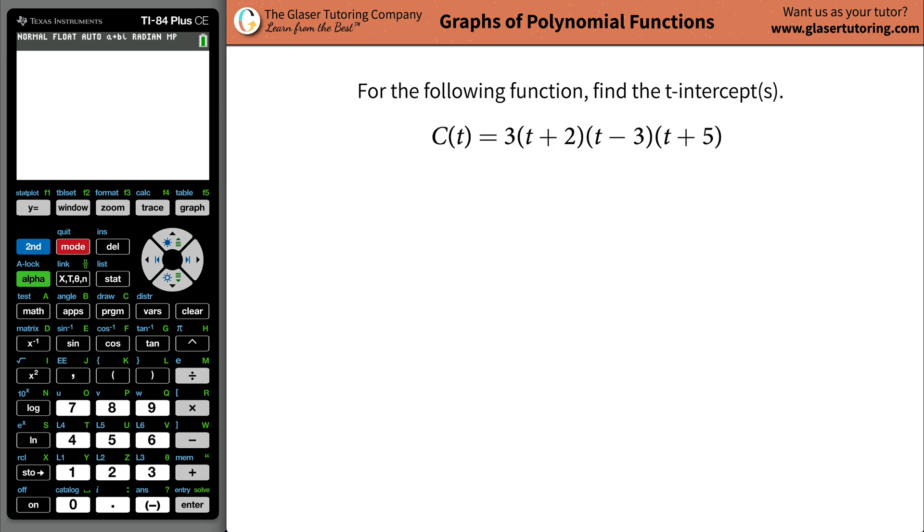Today, my goal for this video is to teach you the most simplistic and easiest way to find the t or x intercepts of a particular function. Let's take a look. So we're given this function, C(t) = 3(t + 2)(t - 3)(t + 5).